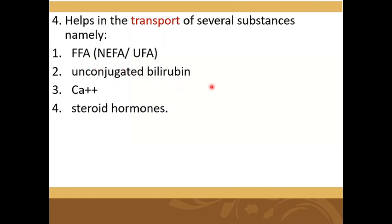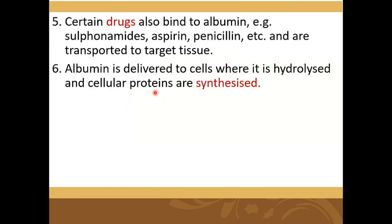Unconjugated bilirubin also combines with albumin. Albumin also helps in the transport of calcium and steroid hormones. Certain drugs also bind to albumin — for example, sulfonamide drugs, aspirin, and penicillin — and are transported to the target tissue.